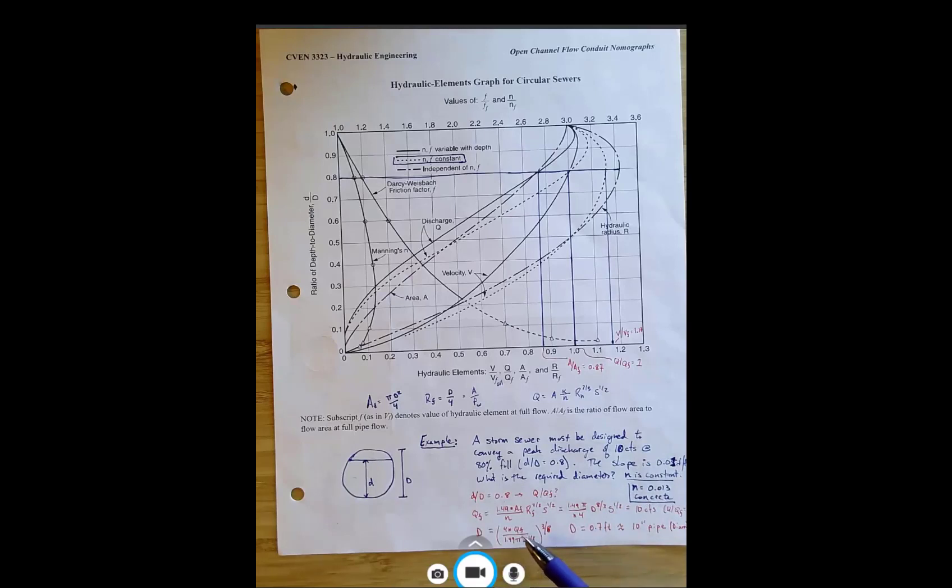And because we know QF is equal to Q, if we're somewhere else on that curve, you could simply, you could very easily solve for QF if you know what your Q is supposed to be. And then we can just plug that in and get our diameter.